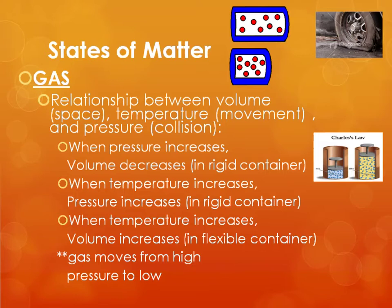With gases, there is a distinct relationship between volume — which involves the space between the particles — the temperature of the gas, which has to do with how fast the particles are moving, and the pressure of the gas, which has to do with how often the particles collide in the space they're in. The first relationship is that if I have a rigid container, and I increase the pressure — pushing in from the outside to make it take up a smaller space — then the volume will decrease. You're going to pack it into a tighter area.